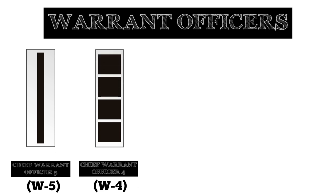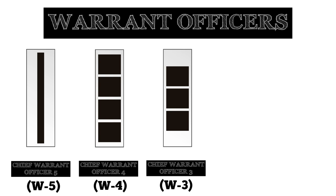Chief Warrant Officer Four are senior level experts in both the technical and tactical aspects of leading in their respective fields. They typically support operations at battalion, brigade, division, corps, and echelon levels above corps operations. The rank insignia of a Chief Warrant Officer Four consists of a silver bar with four horizontal black stripes.